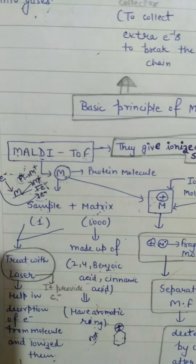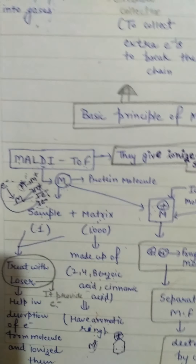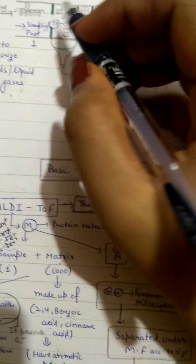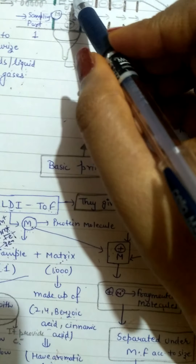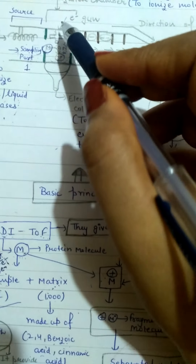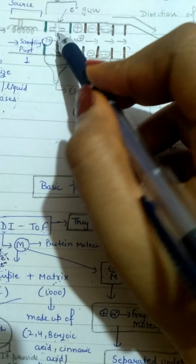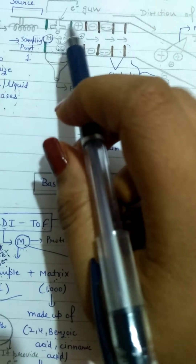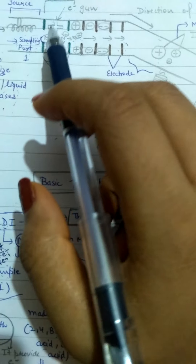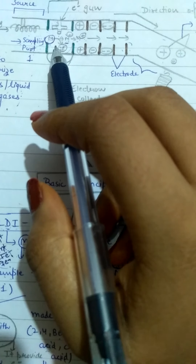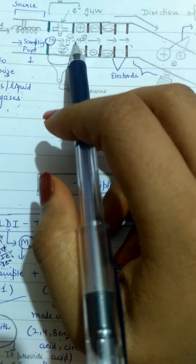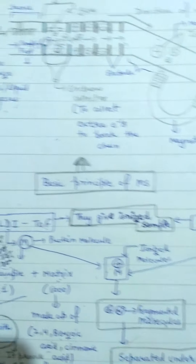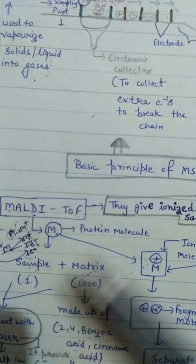When we use a mass spectrometer, we use an electron gun. When we use the electron gun, we bombard our sample and ionize it using the same procedure.